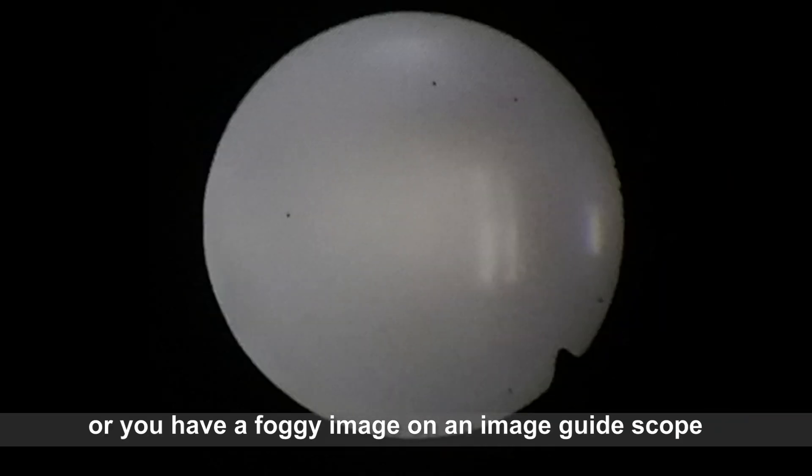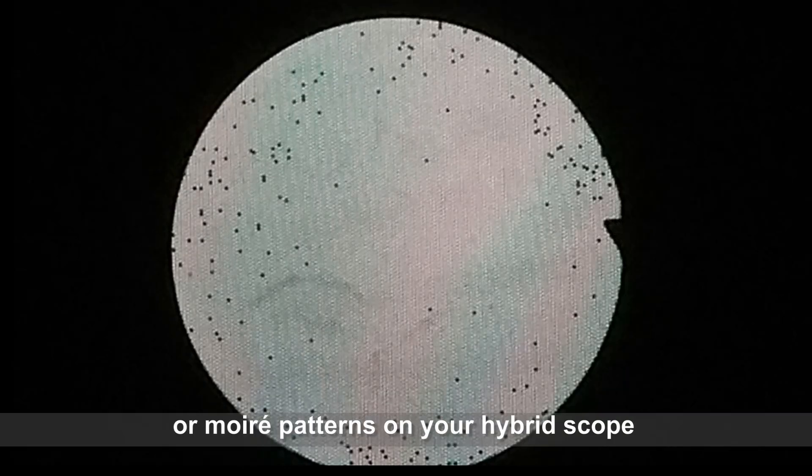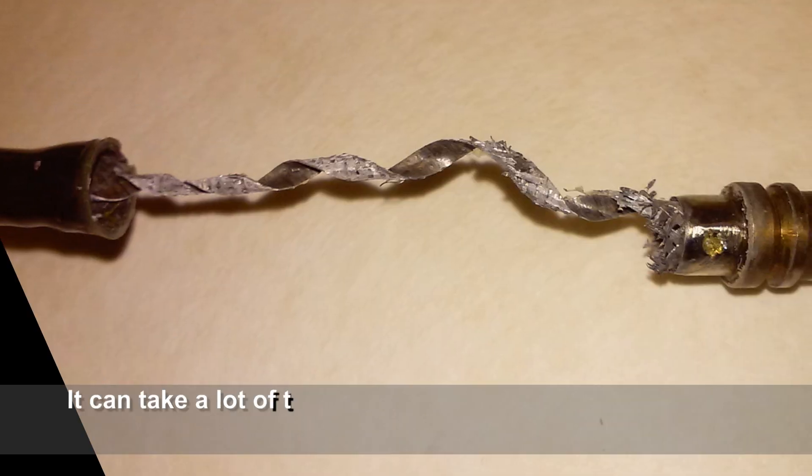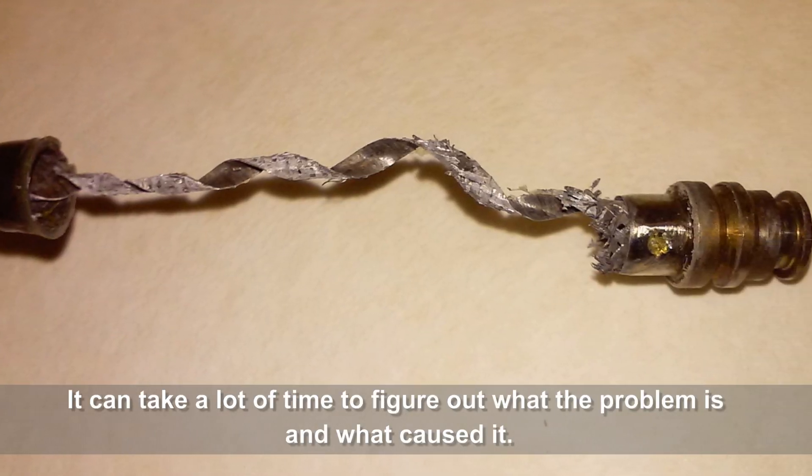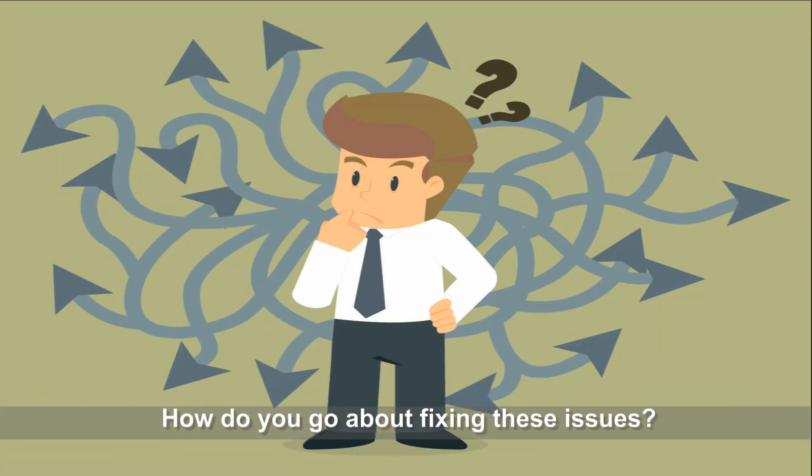Or you may have a foggy image on an image guide scope, or moiré patterns on your hybrid scope, or a blackout problem on your H190 scopes, and so on. It can take a lot of time to figure out what the problem is and what caused it, and how to go about fixing these issues.